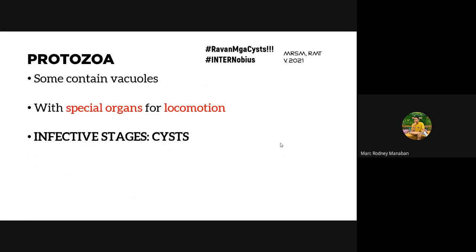Infective stages are the stages of a parasite that infect the host. In comparison, diagnostic stages are the stages that can be recovered from human samples submitted to the laboratory. For amoeba, the infective stage is the cyst, but diagnostic stages can also be cysts — meaning these are the stages recoverable from your sample. The main form that establishes infection is the cyst.